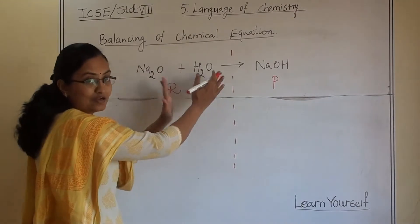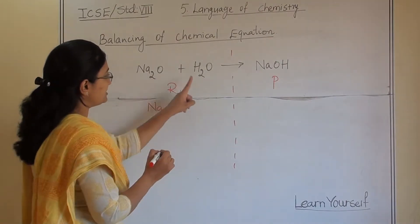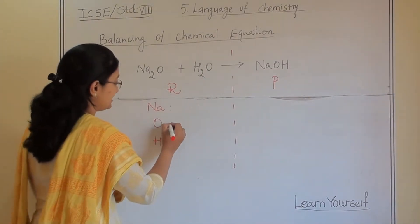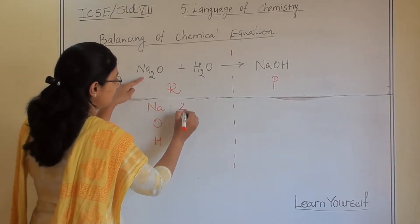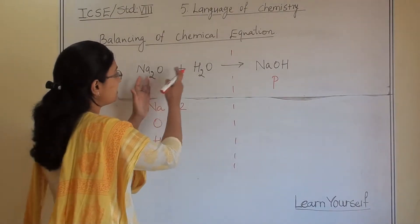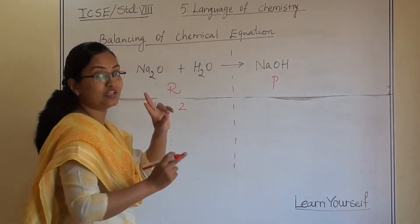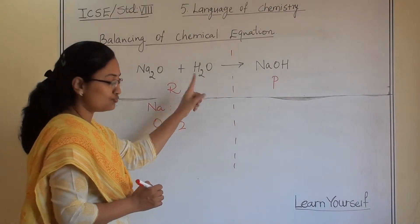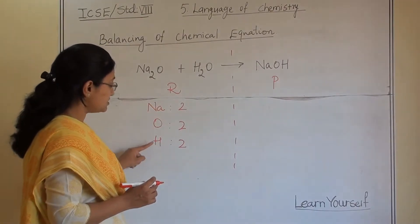How many atoms are there in total on the reactant side? Sodium is there, oxygen is there, and hydrogen is there. Let us count: how many sodium atoms are present? Two. How many oxygen atoms? There is one oxygen in Na₂O and one in H₂O, so there are two oxygen atoms total. How many hydrogens? Two. So on the reactant side: two sodium, two oxygen, and two hydrogen.